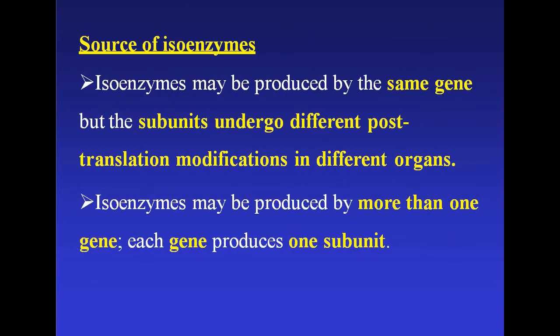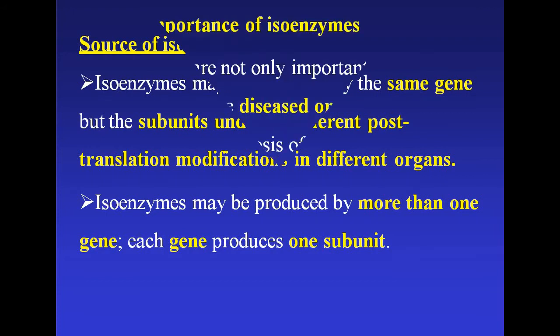What are the sources of isoenzymes? Isoenzymes may be produced by the same gene, but the subunits undergo different post-translational modification in different organs. Isoenzymes may also be produced by more than one gene, where each gene produces one subunit.